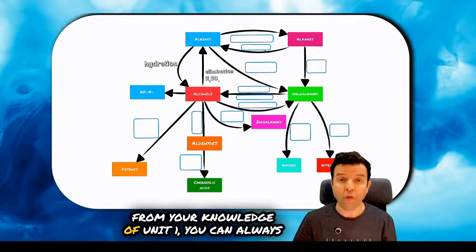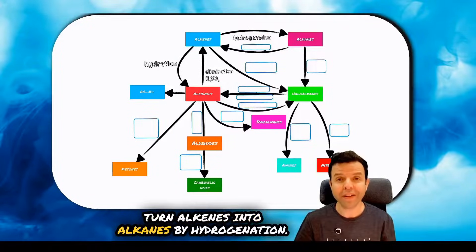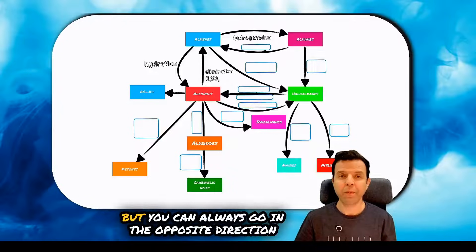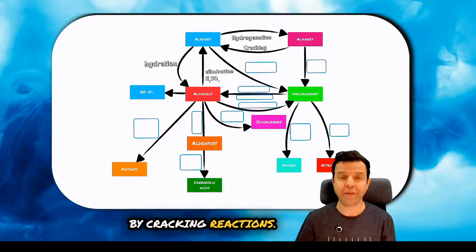From your knowledge of unit 1, you can always turn alkenes into alkenes by hydrogenation, but you can always go in the opposite direction by cracking reactions.